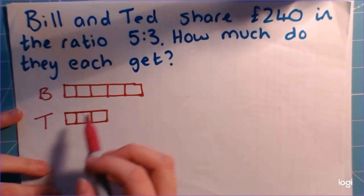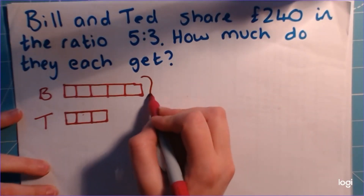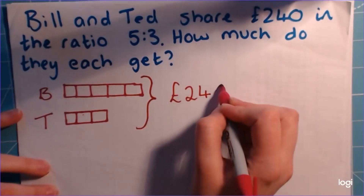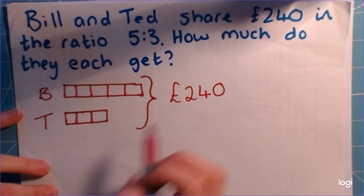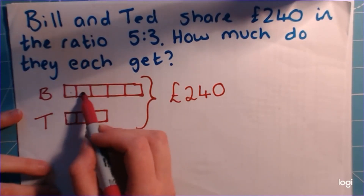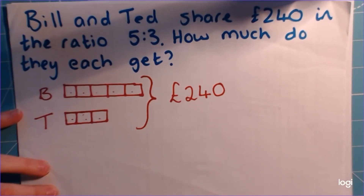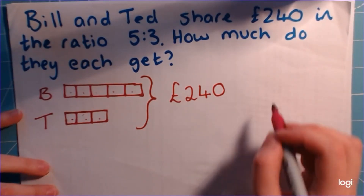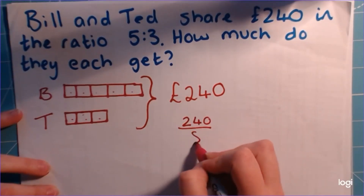So the faster way is to say: all together, these parts have to equal £240. And if we know that our £240 has to be split into 8 equal sized portions, the mathematical way to do that is 240 divided by 8.